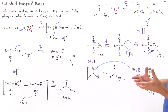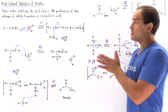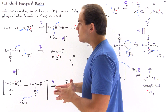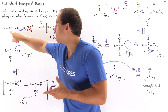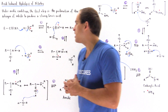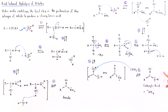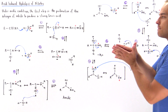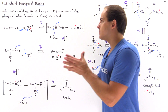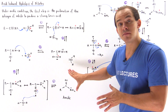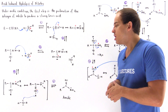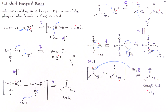The net result of this acid induced hydrolysis of nitrile is to take the nitrile compound and transform it into our carboxylic acid. The first step is to transform the nitrile into an amide, and then from the amide it is transformed into the carboxylic acid.